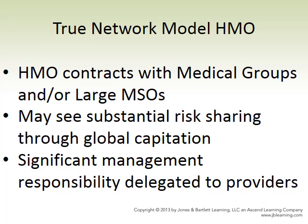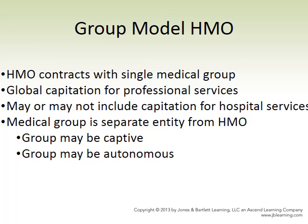The network model is when the HMO contracts with a huge medical group or large medical service organization. You might see substantial risk sharing through global capitation, where they set a specific per-member per-month fee. Most of the responsibility is delegated to providers for managing all aspects of care and finance. In the group model, an HMO contracts with a single medical group. It will generally be capitated. Depending on the contract, it may or may not include payment for hospital services. The medical group is a separate entity from the HMO.